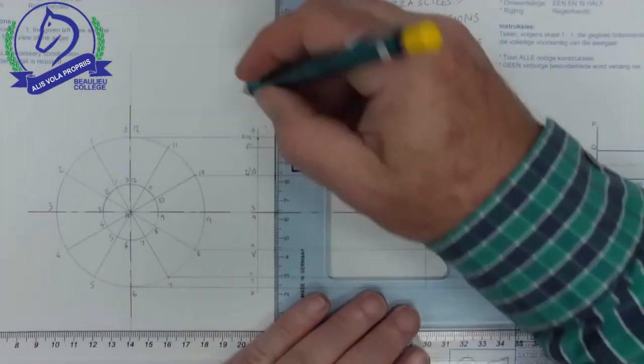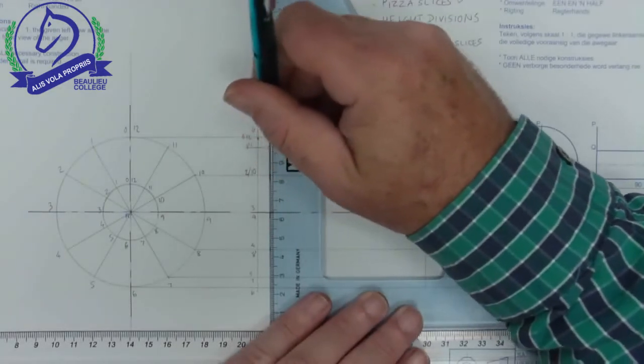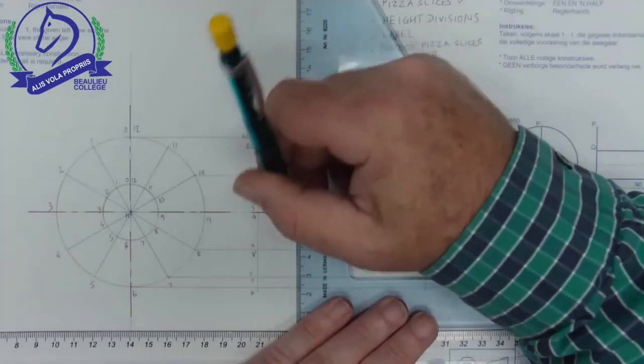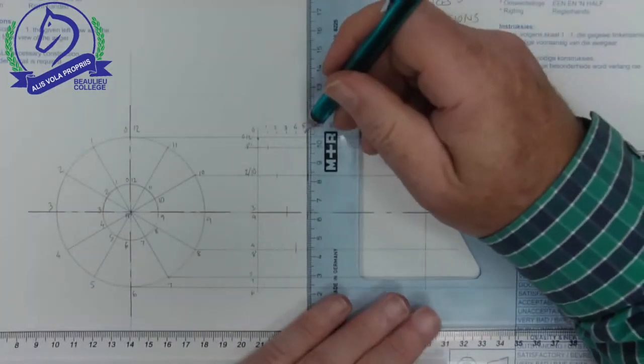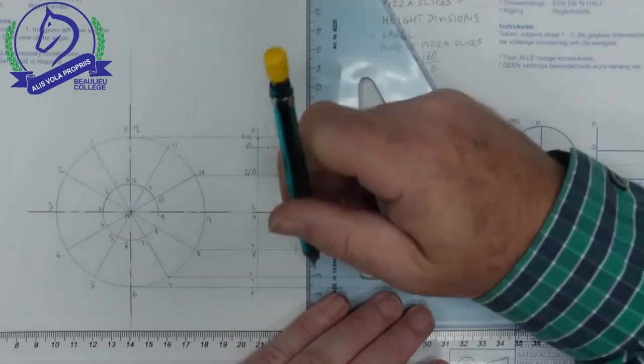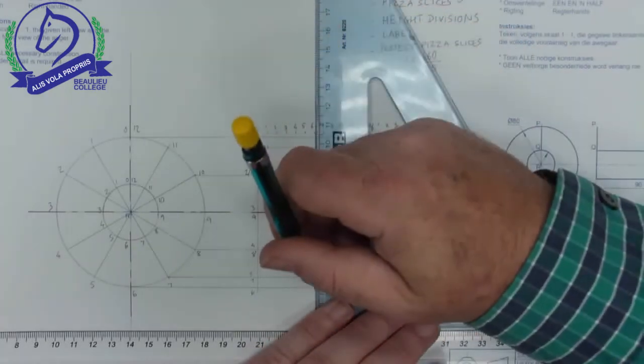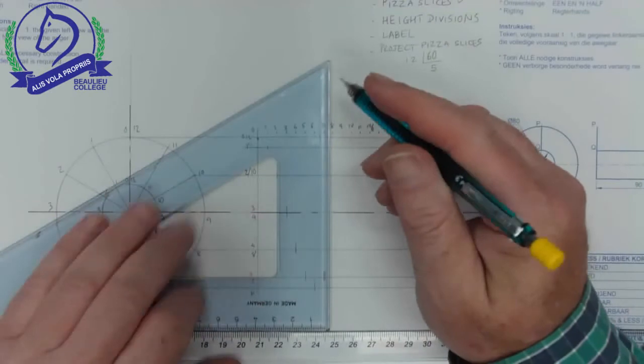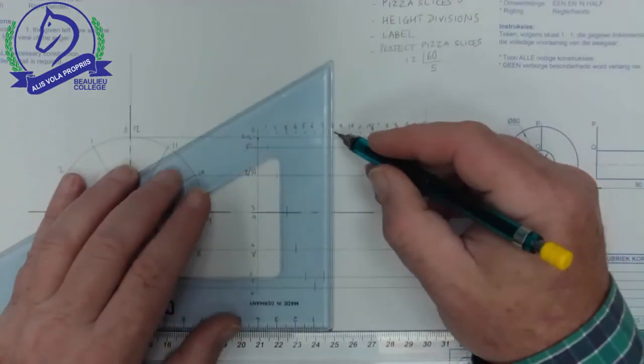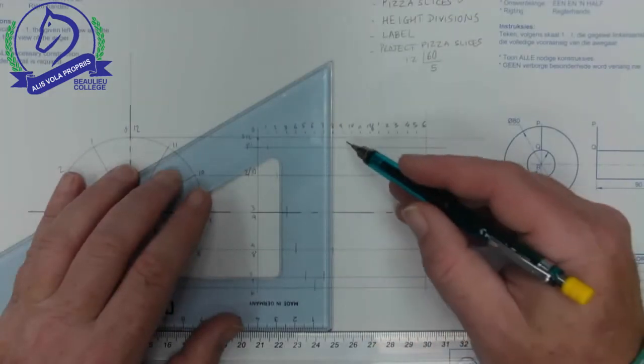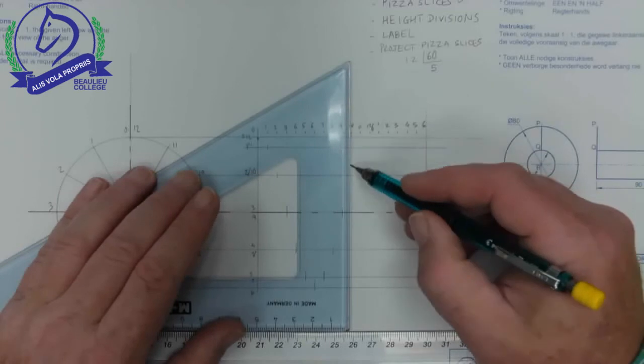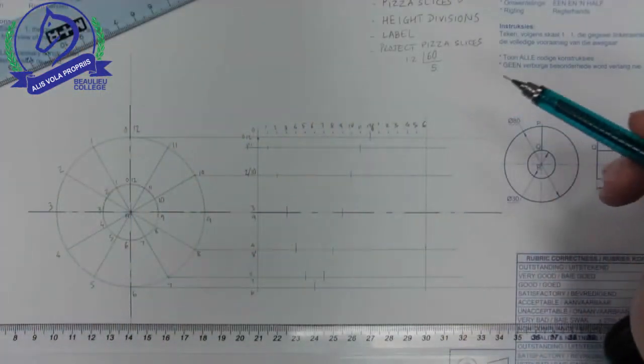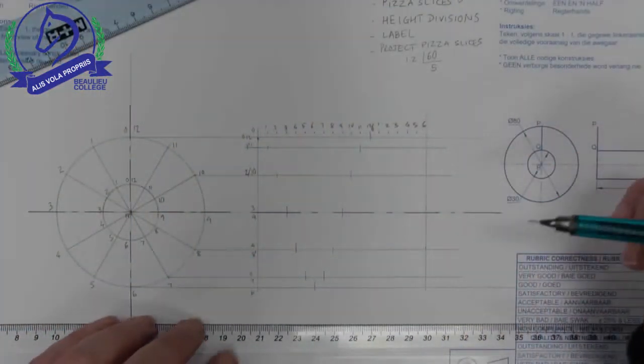And now I can follow my theory of two points. Zero starts there. One lines up with one, two lines up with two, three, four, five, six, seven starts coming back, eight, nine is in the center, ten, eleven, and twelve. There is our one full turn.